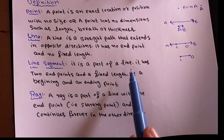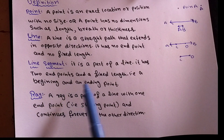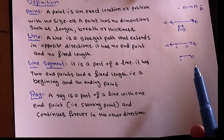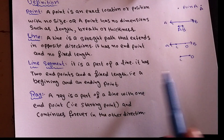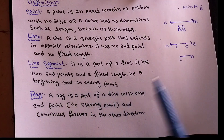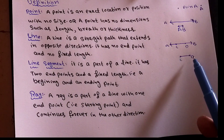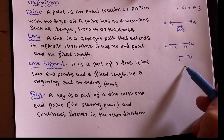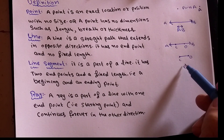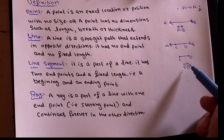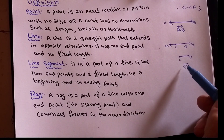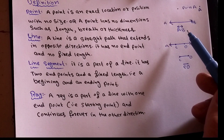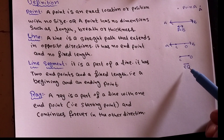It is a part of a line. It has two endpoints and a fixed length. There is a beginning point and an ending point. For example, CD is a line segment - we write it as CD with a bar on top (no arrow). On both sides there are no arrow signs, meaning it does not extend further. That is how we represent a line segment.